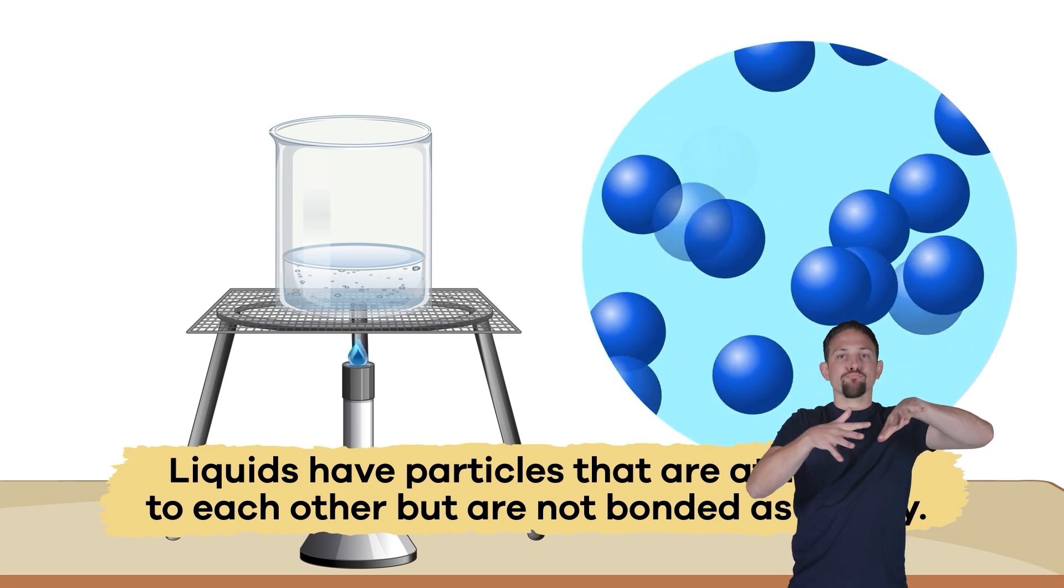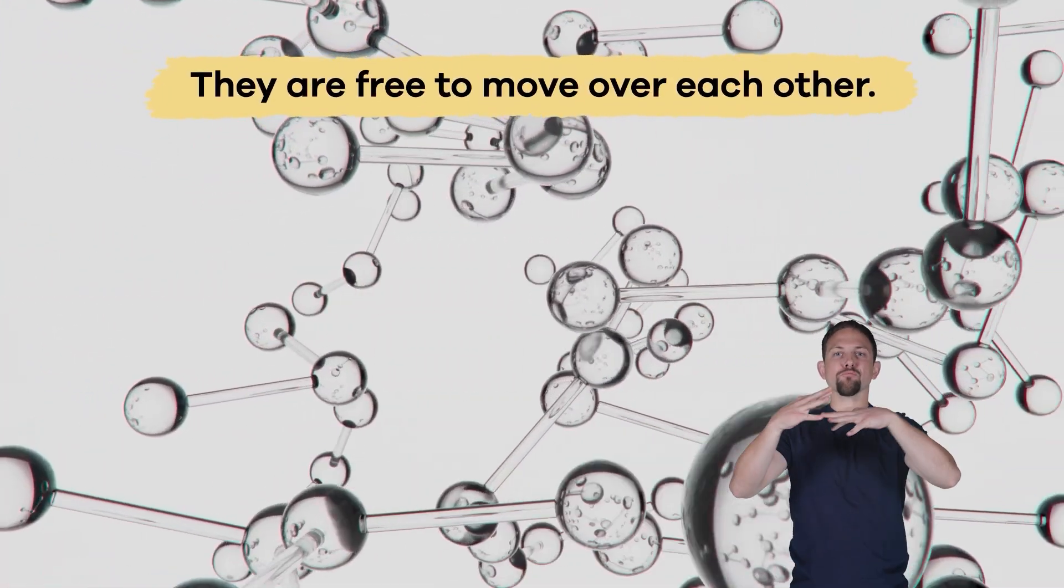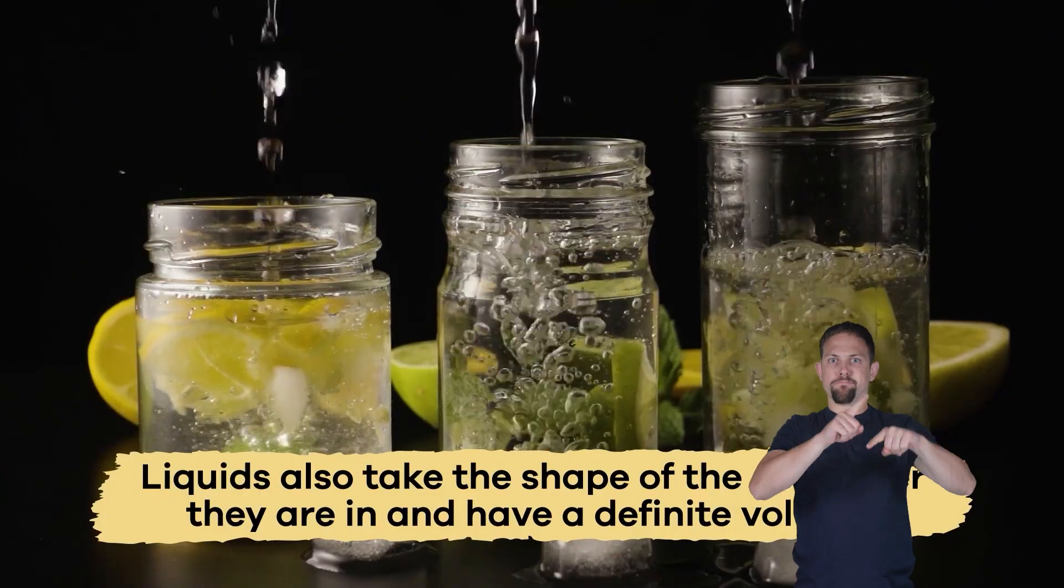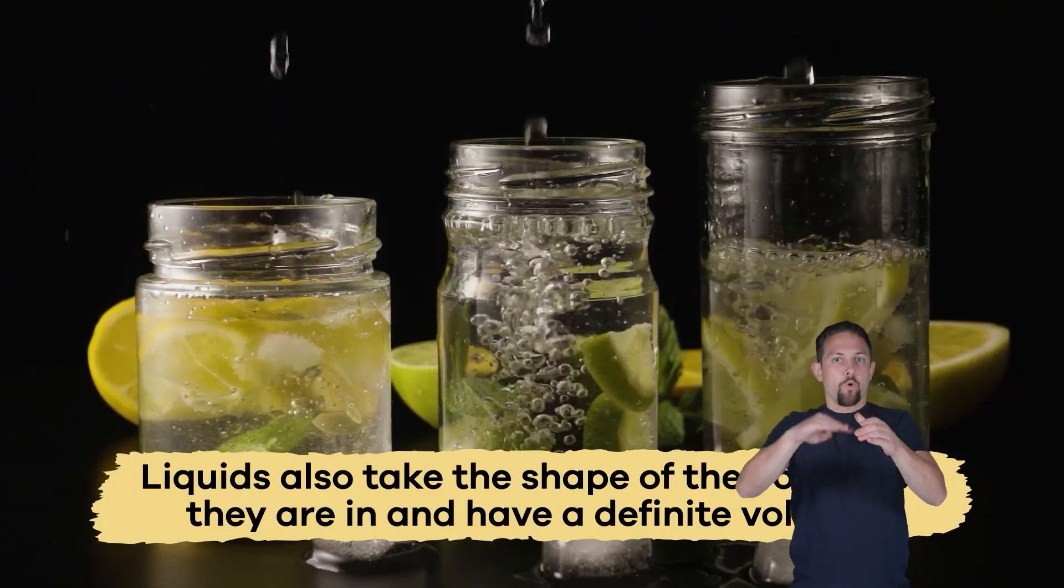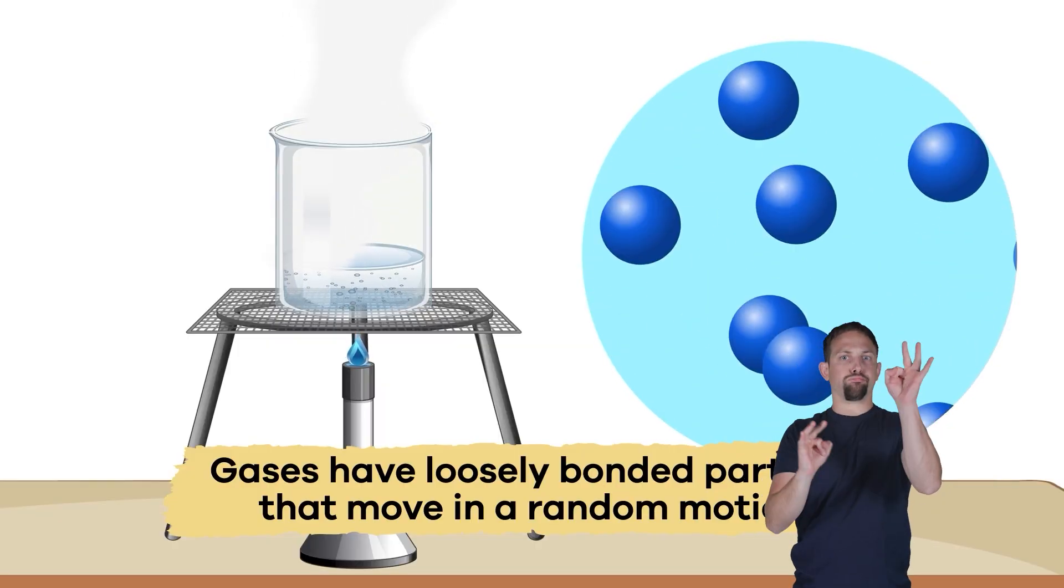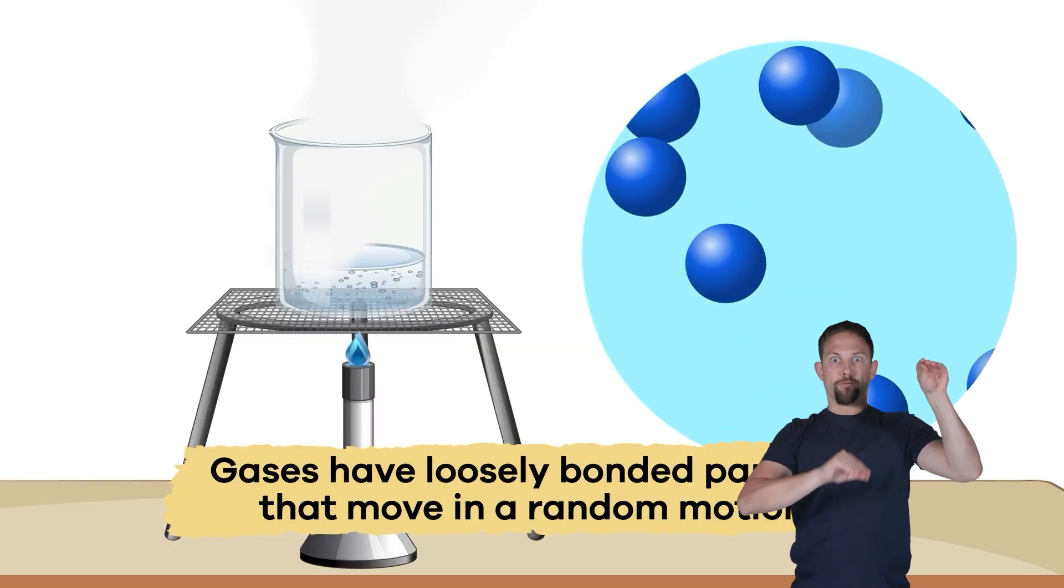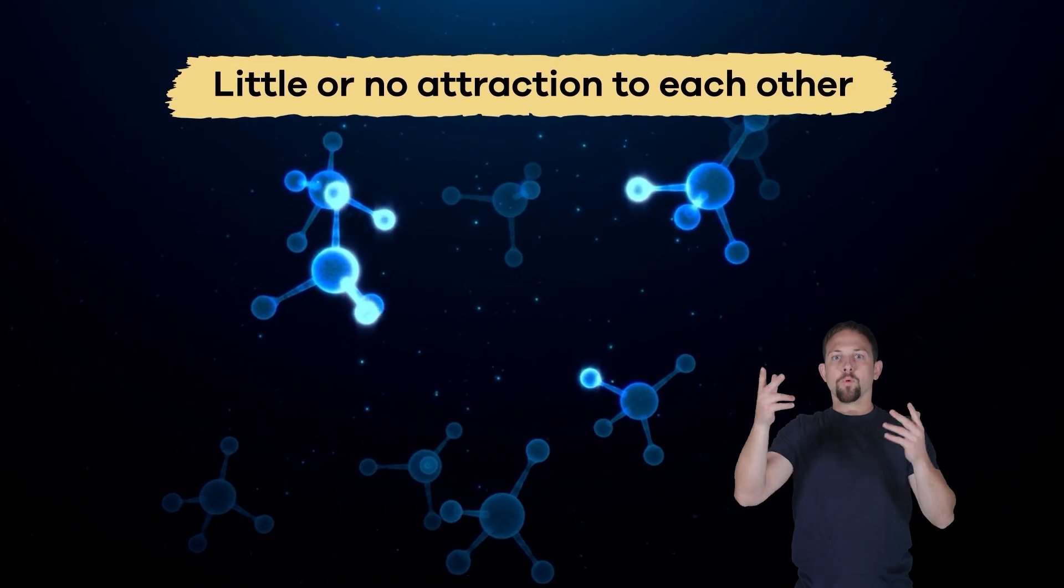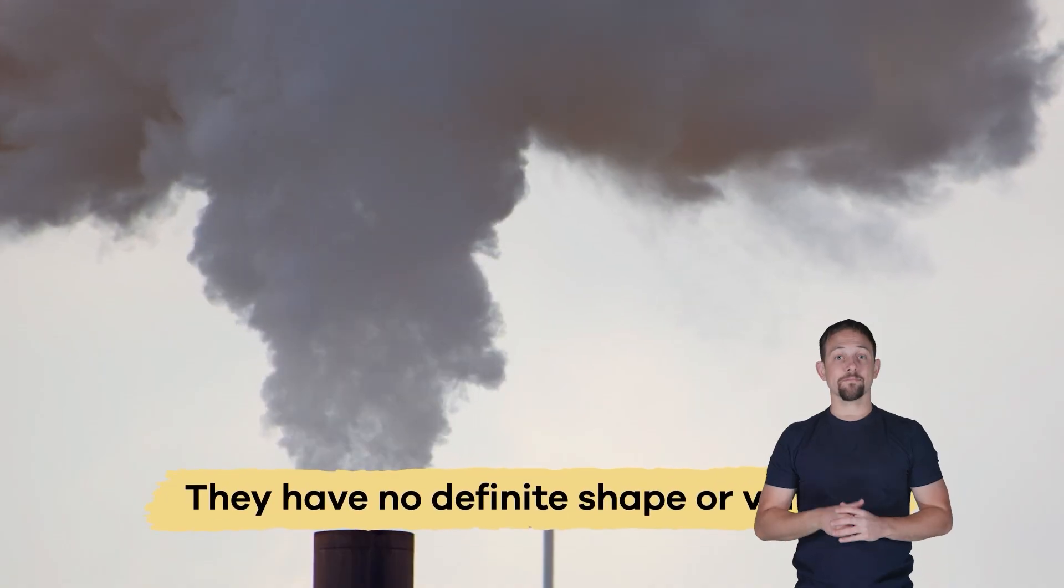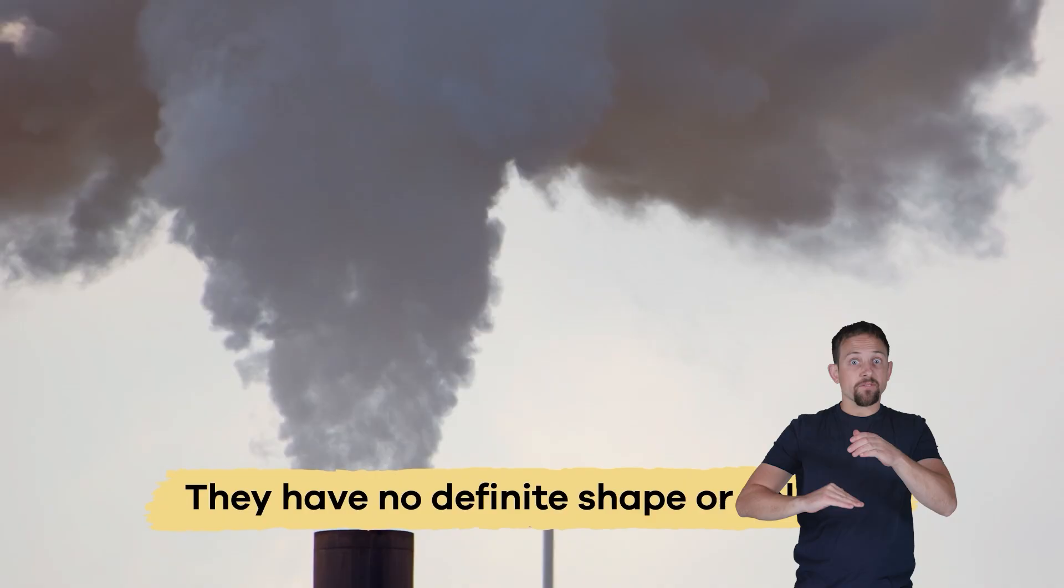Liquids also take the shape of the container they are in and have a definite volume. Gases have loosely bonded particles that move in a random motion with little or no attraction to each other. They have no definite shape or volume.